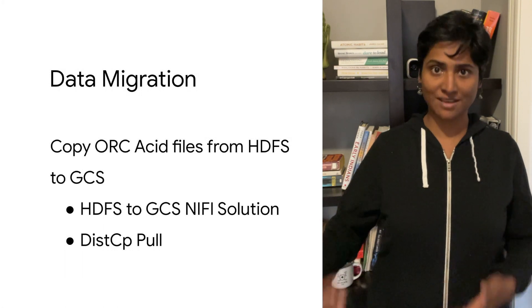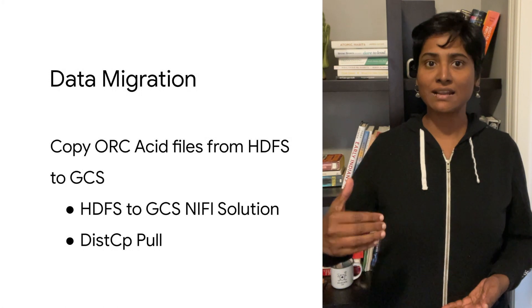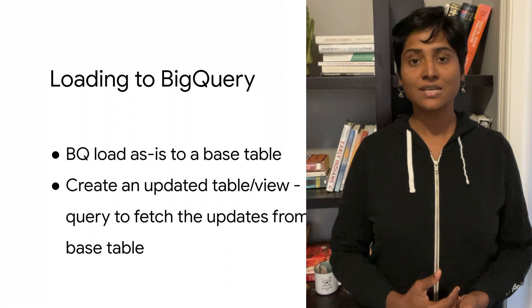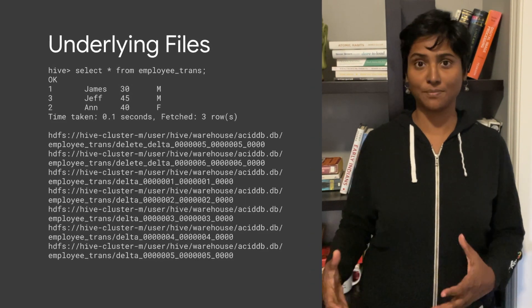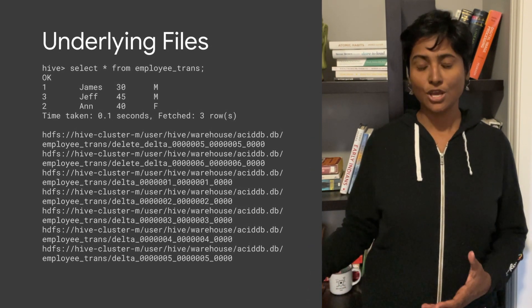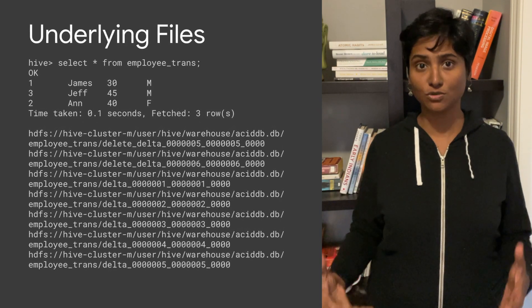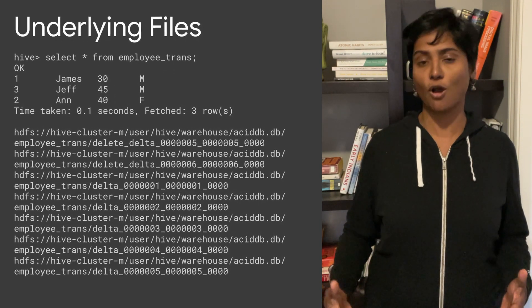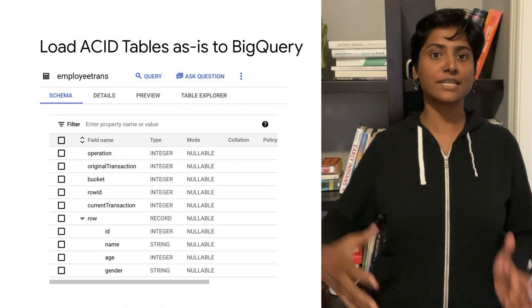There are two main steps to migrate Hive ACID tables to BigQuery. First, copy the underlying ORC files from HDFS and stage these files in Google Cloud Storage. Second, load these ORC files to BigQuery ACID tables. Copy the files under the Hive table and stage the files in Google Cloud Storage using the NiFi-based HDFS to GCS solution published by the Google PSO team, or use distcp pull.